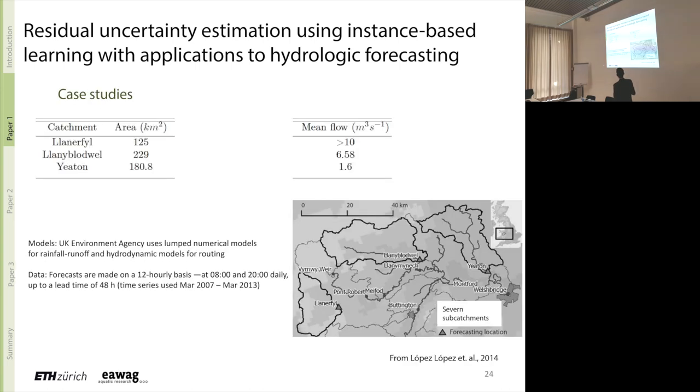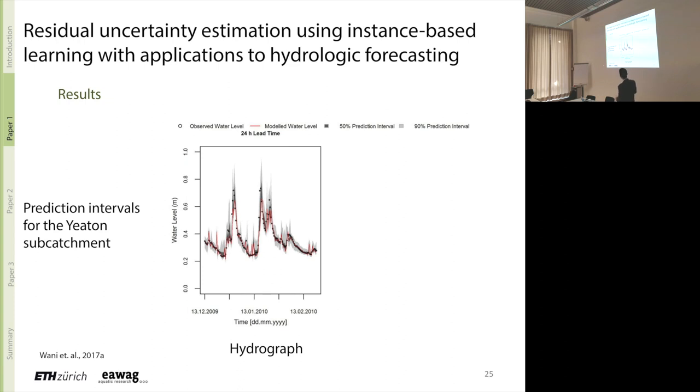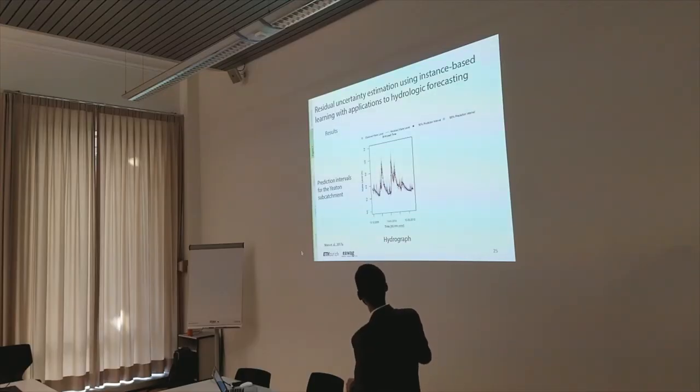We applied this technique on several case studies. There are three subcatchments in UK, 100 to around 200 square kilometers big. And then there's a discharge that gets modeled by the environmental agency. They already have models which have fixed parameters. So what we did was, points would always be the observations and the models generally would be represented through lines. The shaded area would be the uncertainty bands. So we had models predicting the water level which would be the red line. And using the KNN resampling we produced these bands and as you can see observations more or less lie within the bands.